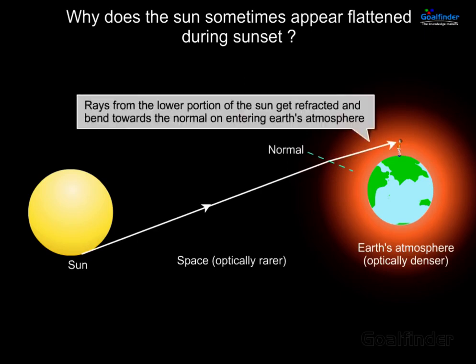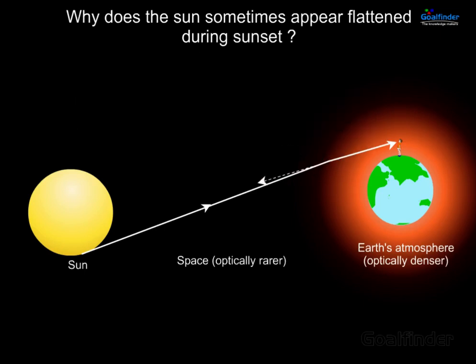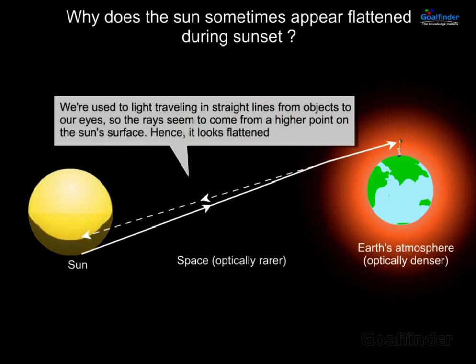Rays from the lower portion of the sun get refracted and bend towards the normal on entering Earth's atmosphere. We are used to light travelling in straight lines from objects to our eyes, so the rays seem to come from a higher point on the sun's surface. Hence, it looks flattened.